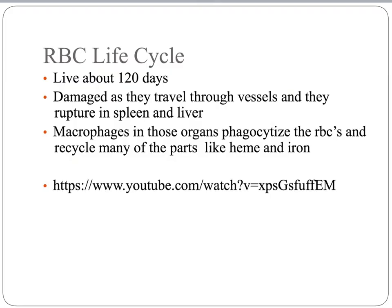As mentioned, red blood cells — erythrocytes — only live about 120 days. They don't have a nucleus and can't reproduce, so as they travel through the vessels they become damaged, torn, and start to leak their contents. We have macrophages located inside the spleen and the liver that look for these damaged red blood cells. When those macrophages find them, they phagocytize them — they eat those damaged red blood cells — and then recycle the parts that can be recycled, like heme and iron, so we can rebuild hemoglobin again.